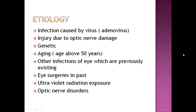Ultraviolet radiation exposure: when ultraviolet rays from any source are exposed to the eye, it makes the eye unable to focus properly by damaging the shape of the eye. Optic nerve disorder: when there is any nervous system disorder related to the optic nerve, it can result in disturbance of the perception of vision.